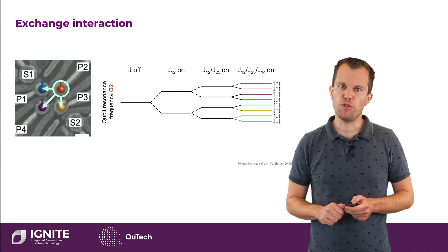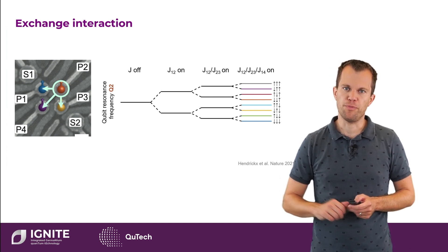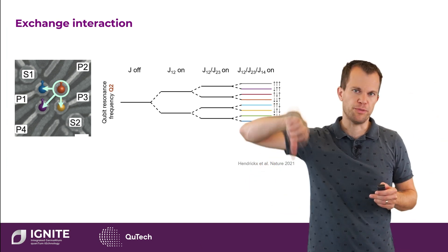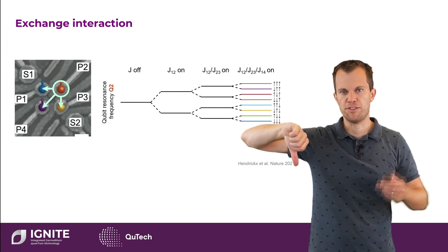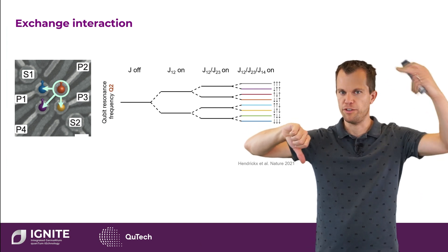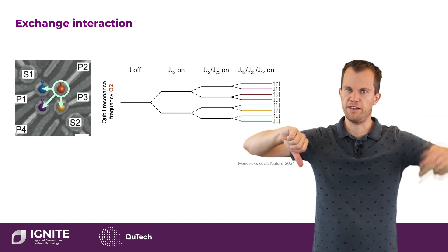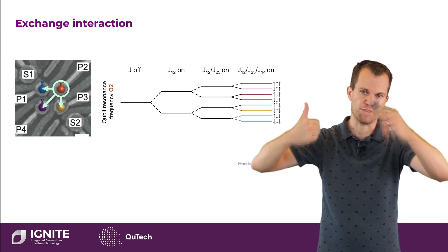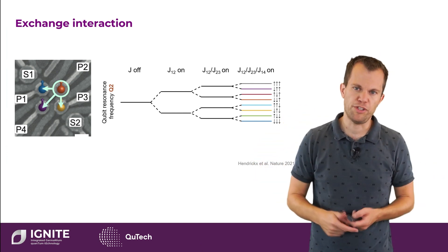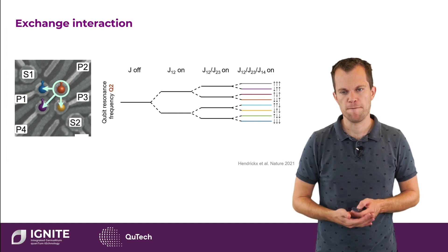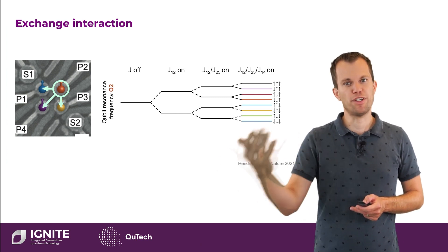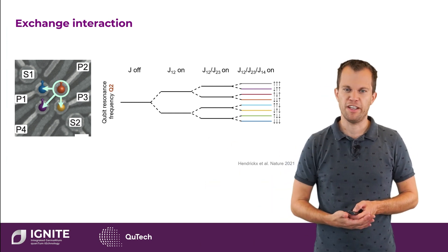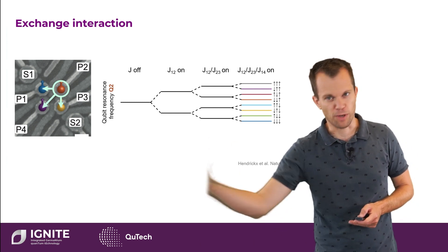We can also do two qubit gates. For example, we can rotate one qubit dependent on the state of the other qubit. For example, if the other qubit is in a spin down state, we can only rotate that qubit if we apply the correct resonance frequency. If it's in the up state, we need to apply another resonance frequency. So we can do a conditional operation. This is called the C-ROT. If we have two exchanges on, then this will become a conditional-conditional rotation, C-C-ROT, and finally a C-C-C-ROT gate.